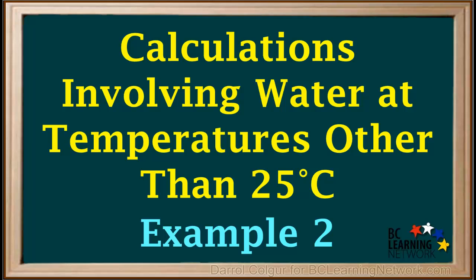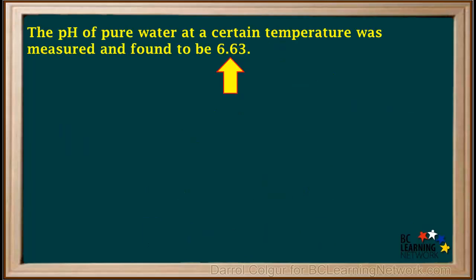We can perform calculations involving pH, pOH, and other quantities for pure water when we're not at 25 degrees. We'll do another example here. We're given that the pH of pure water at a certain temperature was measured and found to be 6.63.